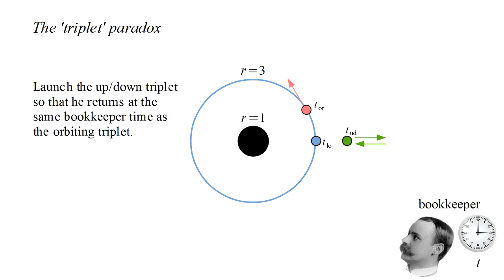Suppose that the up-down triplet is launched with an initial velocity such that he returns to the starting point at precisely the same time that the orbiting triplet does. Which of the triplets, if any, will be older or younger than the other two?